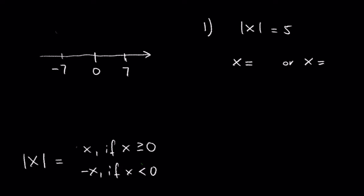In this video, I will focus on solving equations containing the absolute value of a variable expression. The distance from 0 on the number line is what we call the absolute value. It's always positive. The points 7 and negative 7 have the same distance from 0, which means that the absolute value of 7 is 7, and the absolute value of negative 7 is also 7.